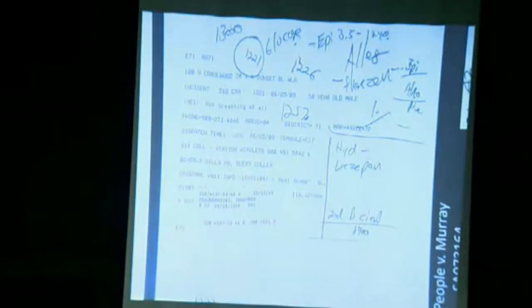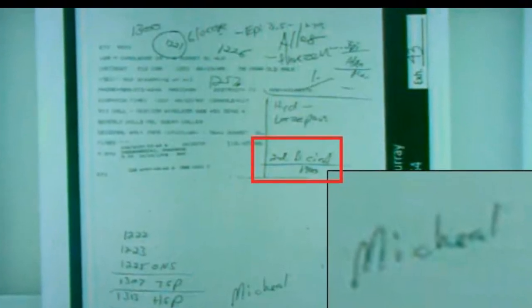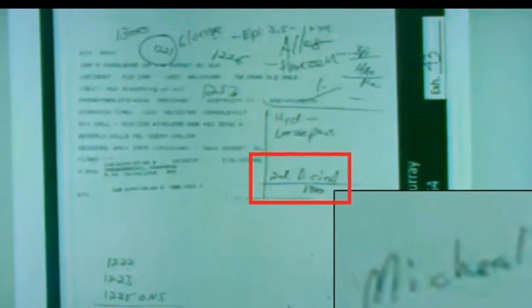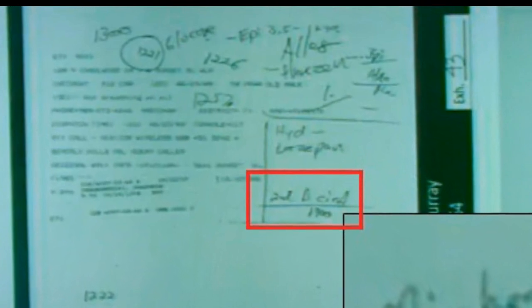Below it there appears to be a number, what is that? The number's 1,400. What is the significance of that number? It's when the second bicarbonate was given, but that's not accurate.